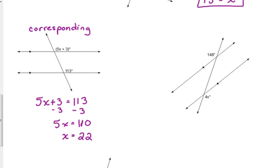All right. How about the one here on the right? We've got 148 degrees on the top and 4x on the bottom. Alternate exterior. Good. They're on opposite sides of the transversal. They're outside of our parallel lines. Alternate exterior.